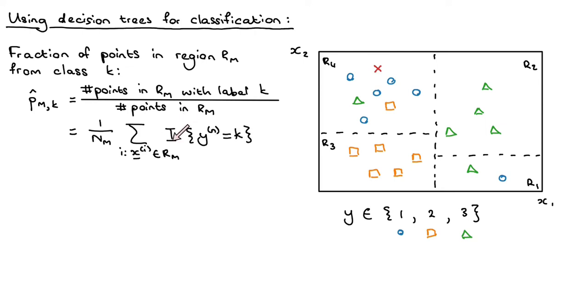So just a reminder, this is the indicator function. It returns a 1 if the statement inside the curly braces is true. So this will just return the number of points in region RM which are assigned the label K.